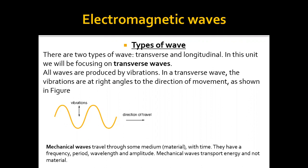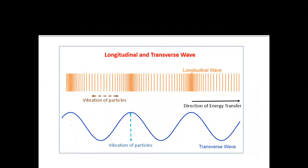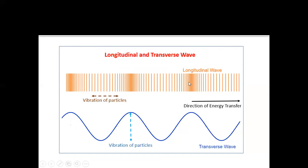If you put mechanical waves inside a vacuum, they are not going to travel — they need a material to move through. Now, before going to electromagnetic waves, let's look at the difference between longitudinal and transverse waves. In longitudinal waves, the particles vibrate straight, next to each other. For transverse waves, they move like a wave — up and down.